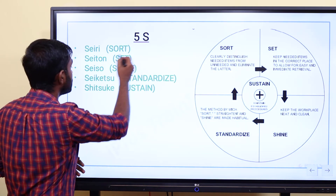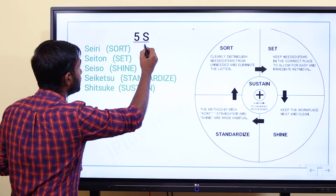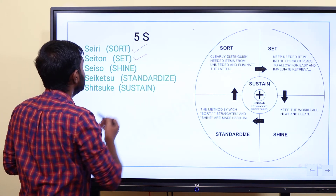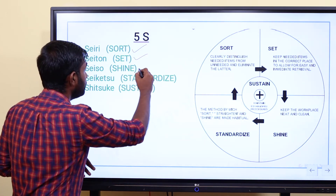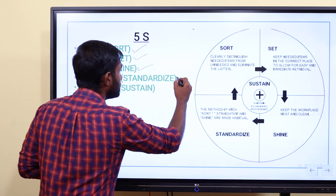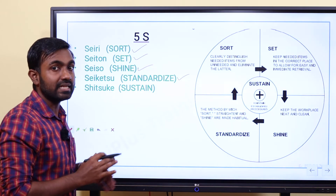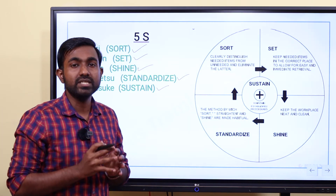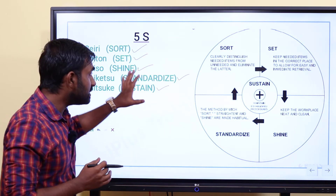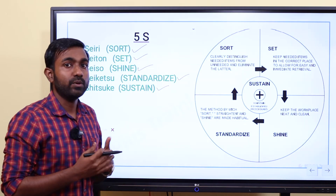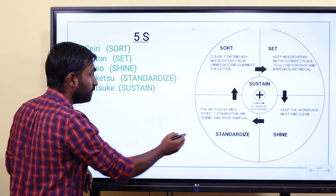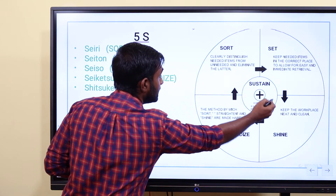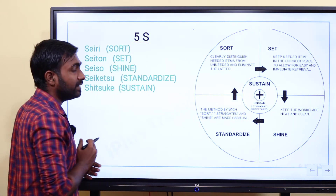Seiri is sorting — that is the answer. Seiton is set in order. Seiso means shine. Seiketsu means standardize. Shitsuke means sustain. These five words improve the working environment and working procedures. We can increase productivity using this five-word concept — Sort, Set, Shine, Standardize, Sustain.